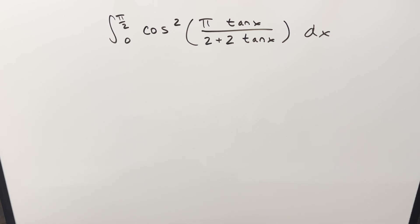Okay, we have here kind of a complicated looking integral from the Berkeley Integration B 2024. We've got the integral from 0 to π/2 of cosine squared of π tan x over 2 plus 2 tan x dx.